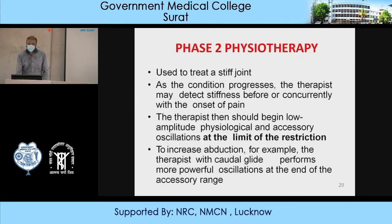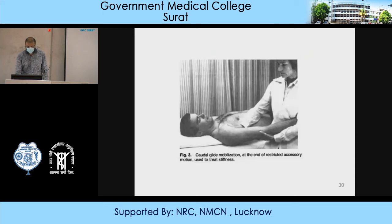Phase 2 physiotherapy is used to treat a stiff joint. As this condition progresses, the therapist may detect stiffness before or concurrently with onset of pain. The therapist should begin low-amplitude physiotherapy in accessory oscillation at the limit of restriction. To increase abduction, the therapist performs more powerful oscillation at the end of the accessory range — quadrant mobilization at the end of restriction, using accessory motion to treat stiffness.